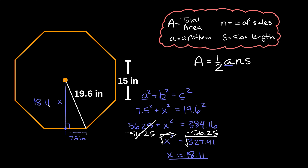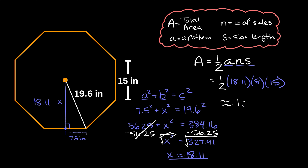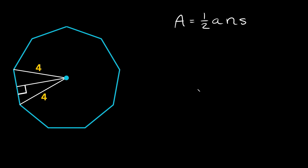Now that we know little a, let's plug it into our formula. The total area equals one half times 18.11 times n, which is 8 for an octagon, times the side length of 15. Multiplying this out gives approximately 1086.50. Our units are inches, so the area is 1086.50 inches squared.